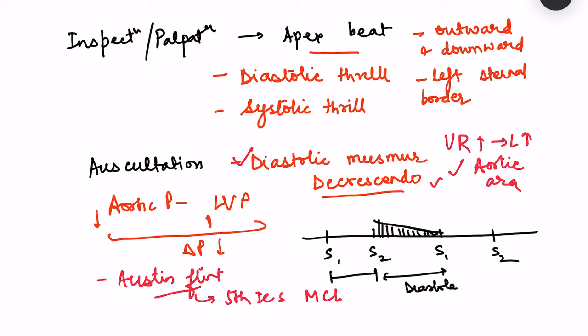The third murmur is a systolic ejection murmur, heard because stroke volume is increased and more blood flows across the aortic valve during systole. This systolic murmur is best heard in the aortic area. So in summary, the pathophysiology of aortic regurgitation explains all the observed signs and symptoms.